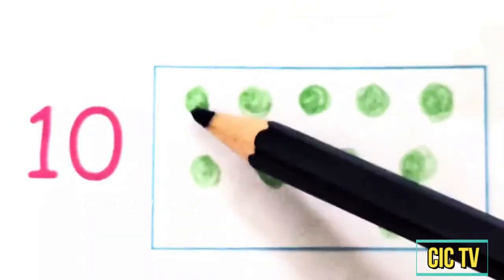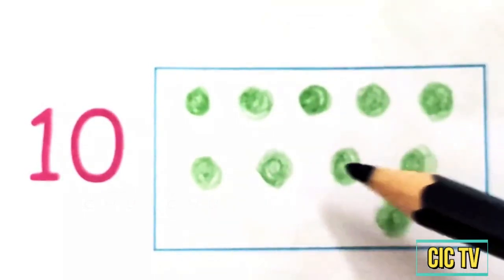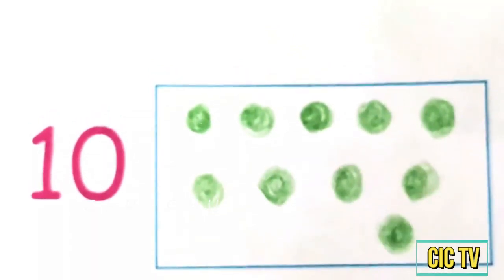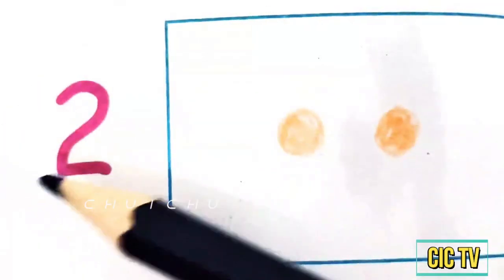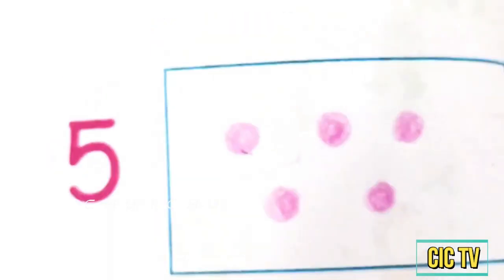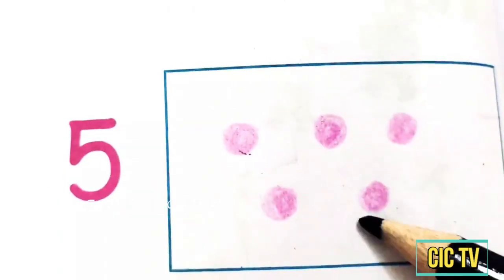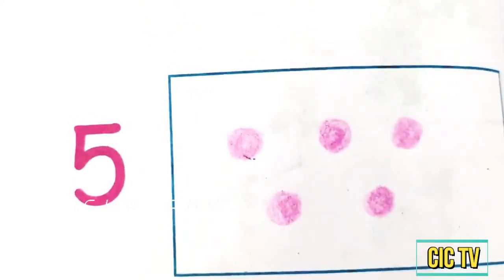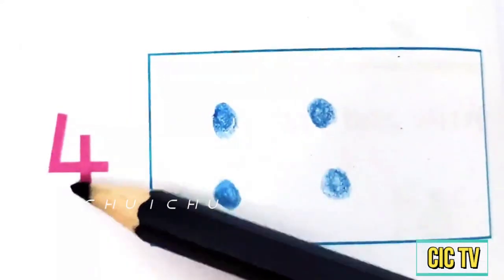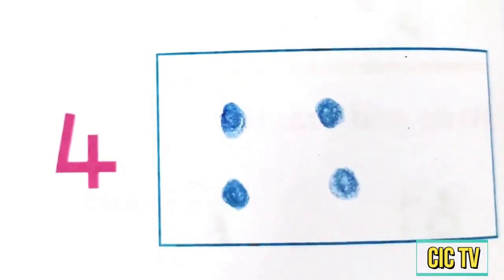10. 1, 2, 3, 4, 5, 6, 7, 8, 9, 10. 1, 2, 3, 4, 5. 5 dots. Last one is 4 dots. 4. 1, 2, 3, 4. 4 dots.